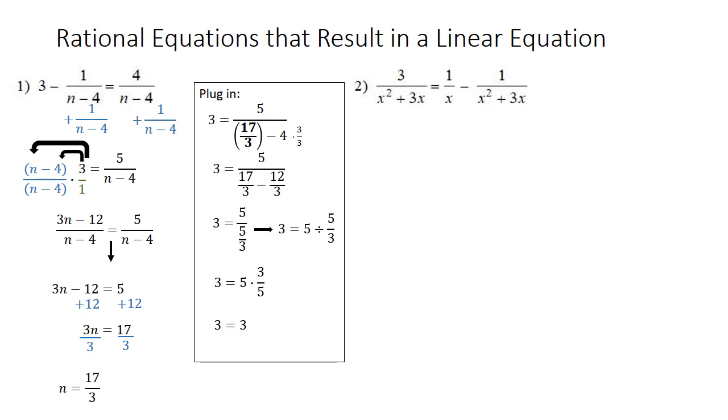If you actually multiply it out, the 5s cancel, and we get 3 equals 3. As long as you get a number equals itself at the end, then that answer is true. It works. So 17 over 3 is our answer.